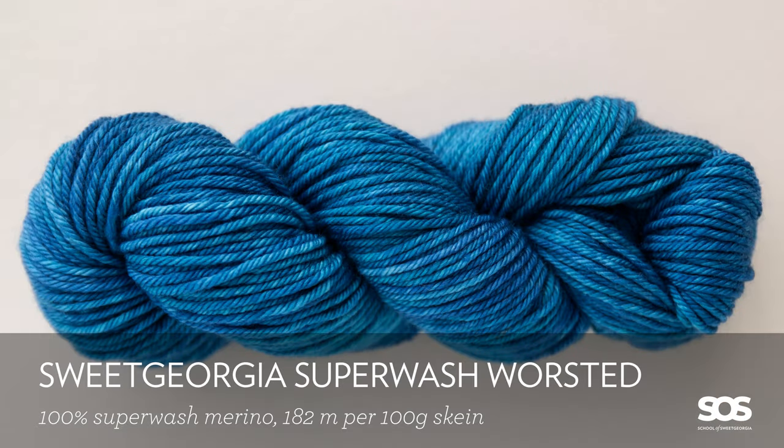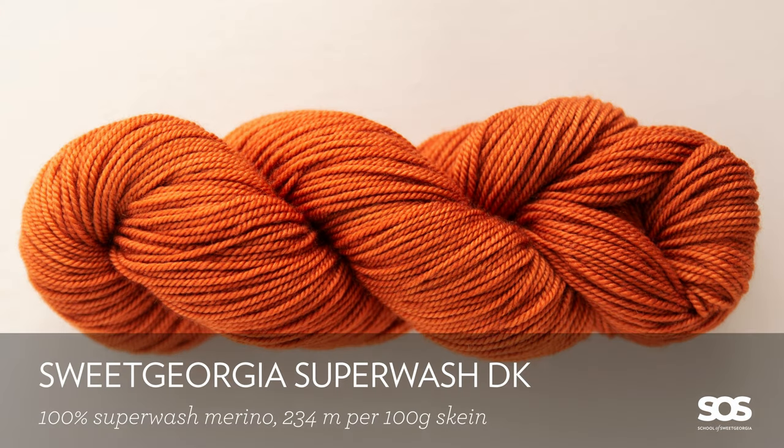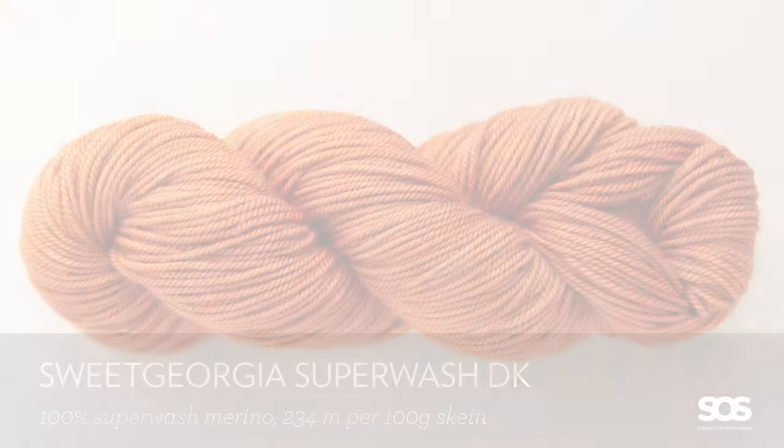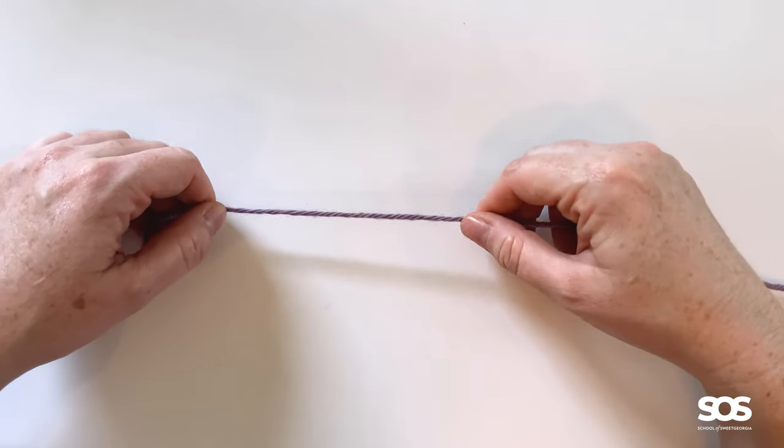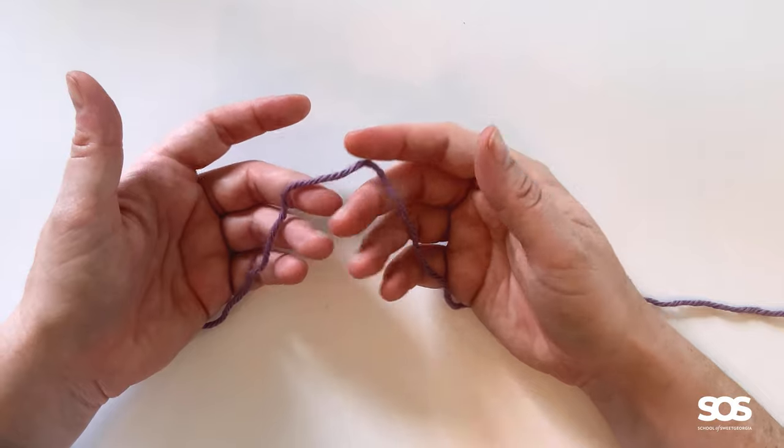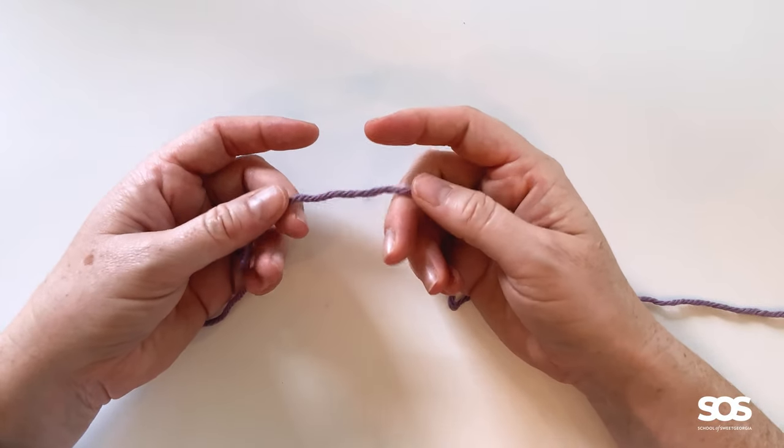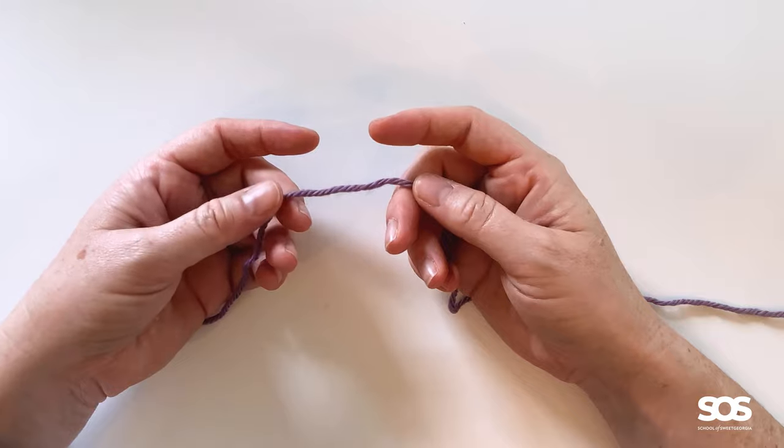So look at something like our Superwash worsted or our Superwash DK. It's not a worsted weight, but it's still a nice thick enough yarn that it's easy to see, easy to work with. It's thick enough so that you can really feel what's going on and you're able to work a little bit faster.